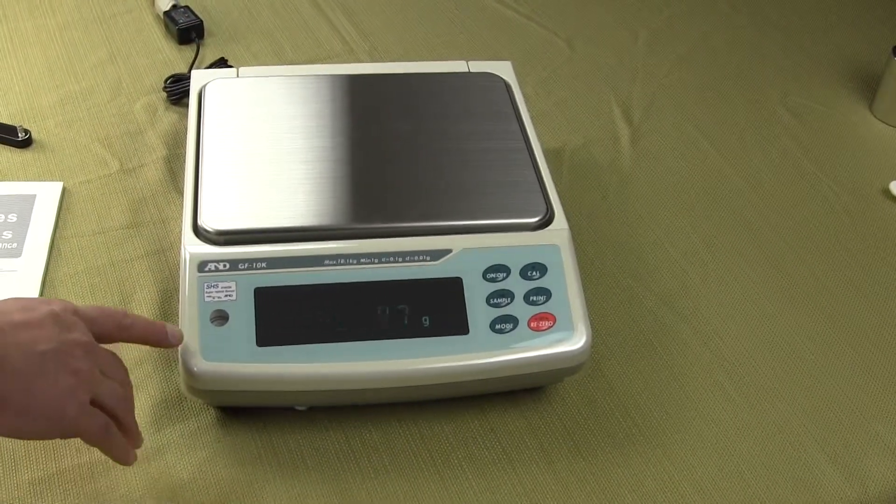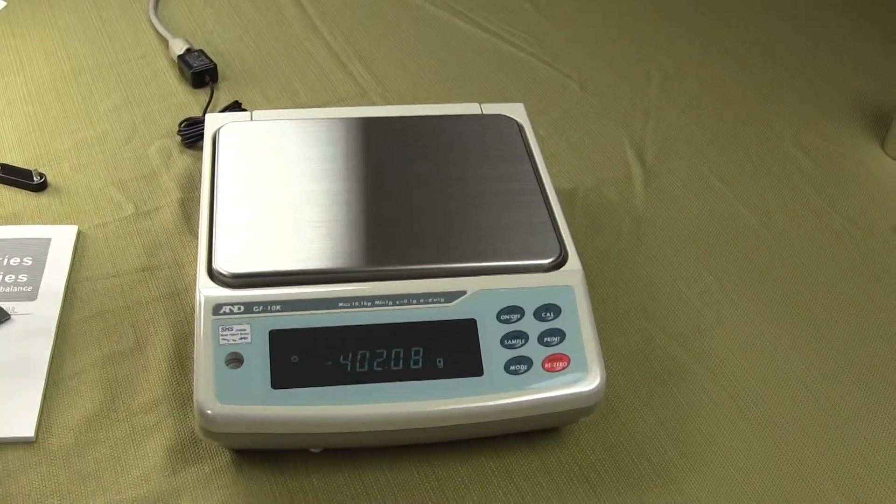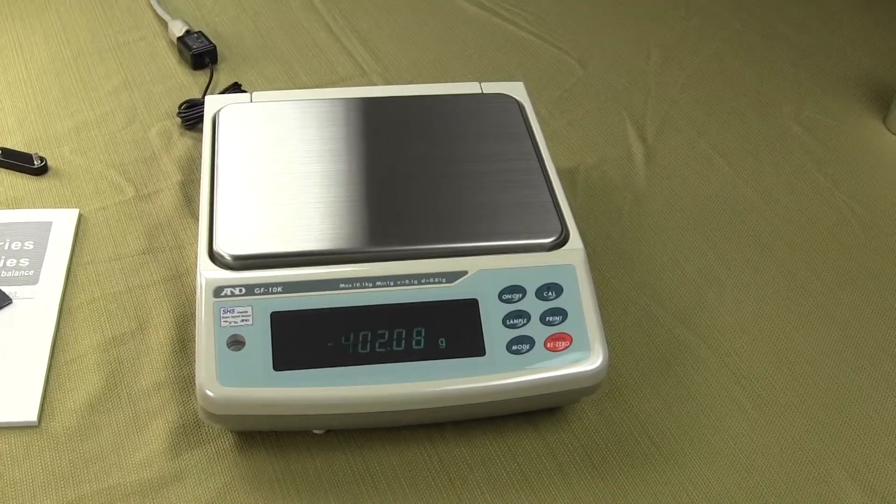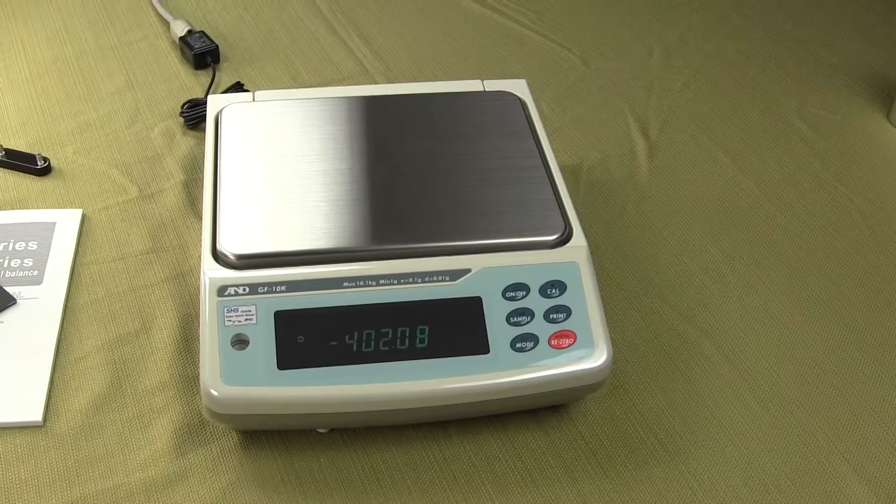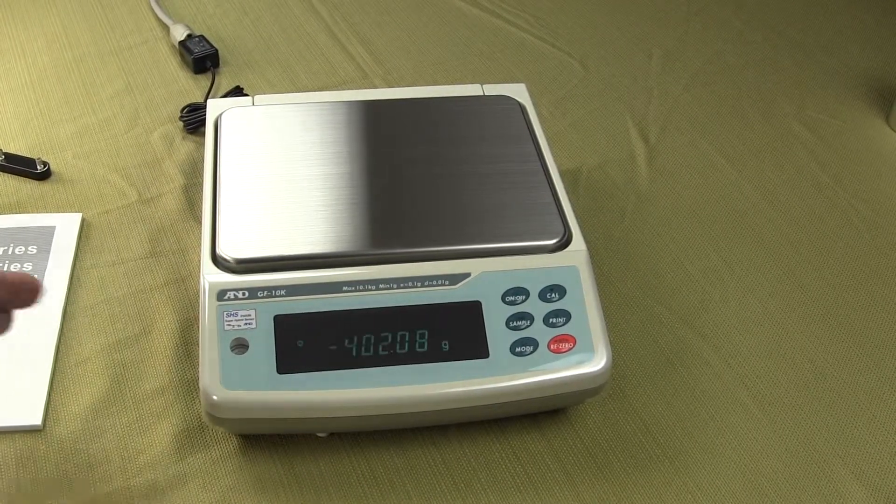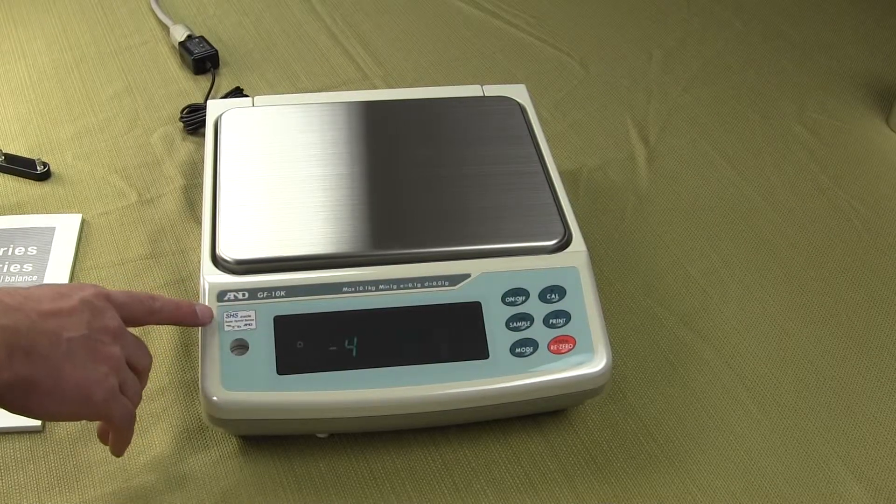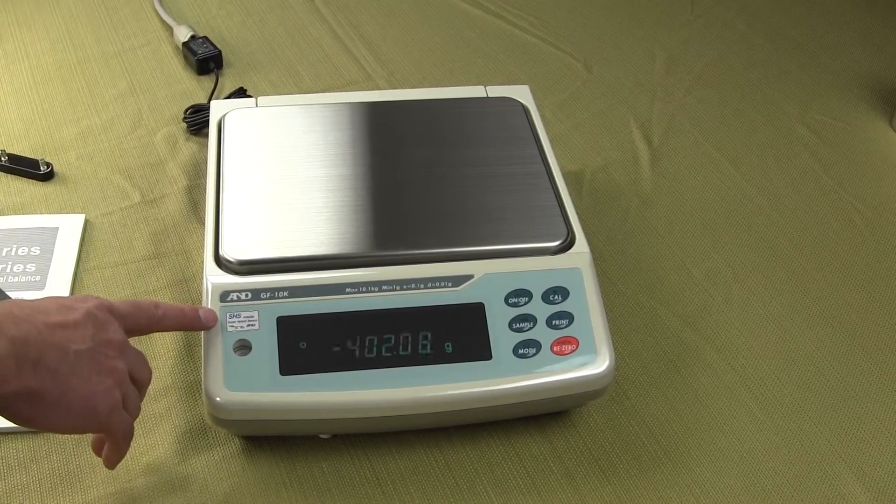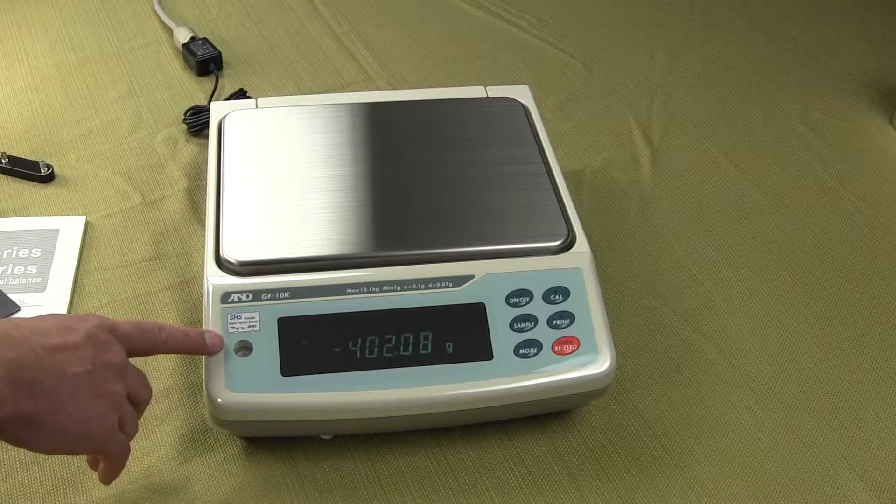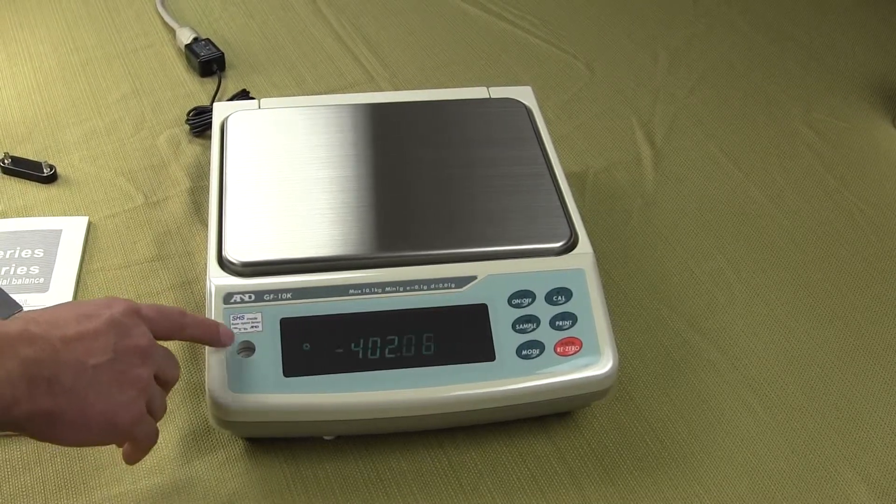We also have a spirit bubble indicator that's located in the front of the balance and that is used for leveling the balance. There are seven models in this series. This particular model is 10,000 by a hundredth of a gram. The models range anywhere from a dual range balance all the way up to 31,000, but that would be by a tenth of a gram.